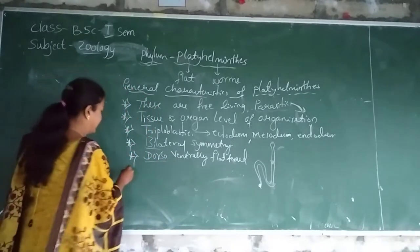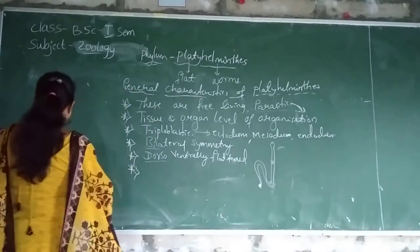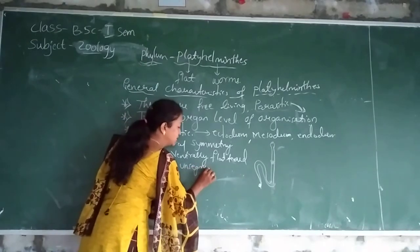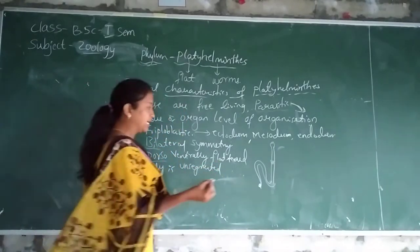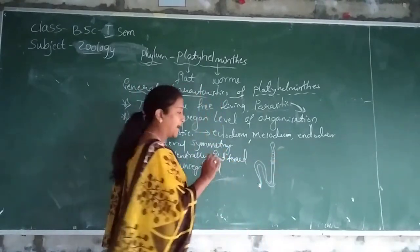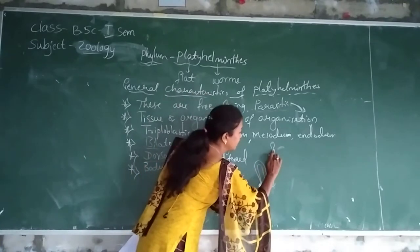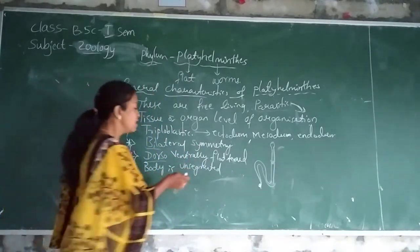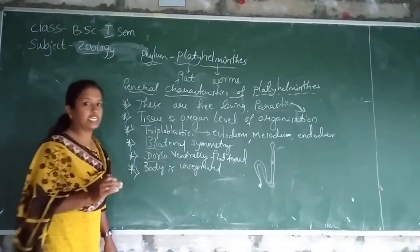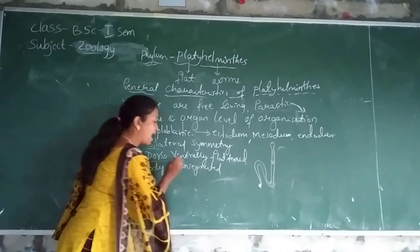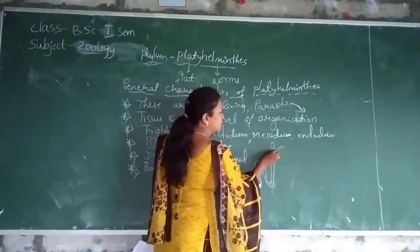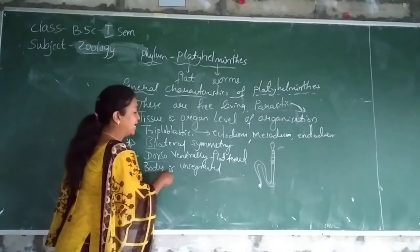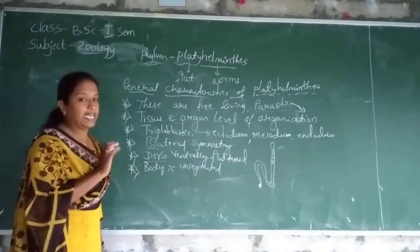The next character is body is unsegmented. Unsegmented means these are not having any segments. In some of the classes, segments are present — for example, a tapeworm is having segments. So the body is segmented or unsegmented depending on the class of platy elemntis.